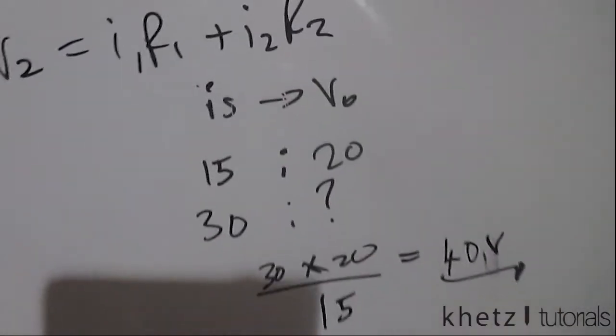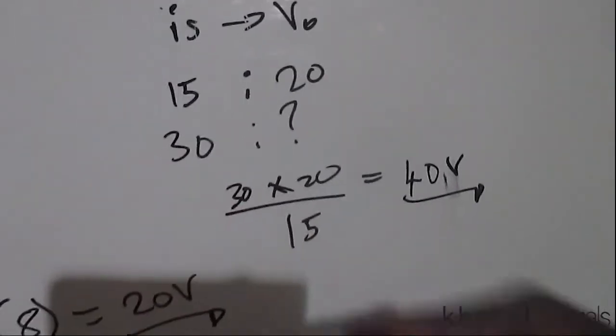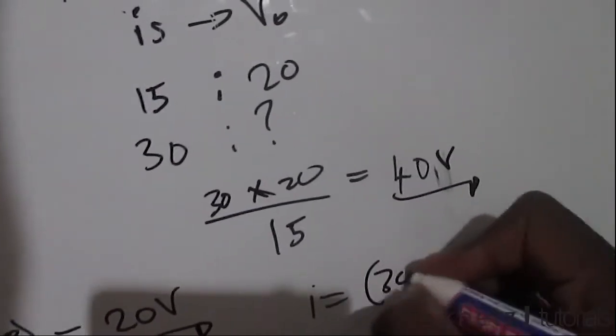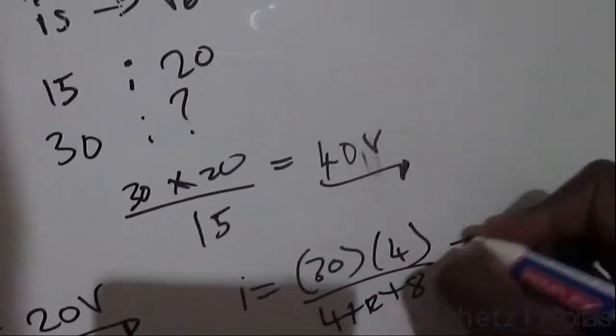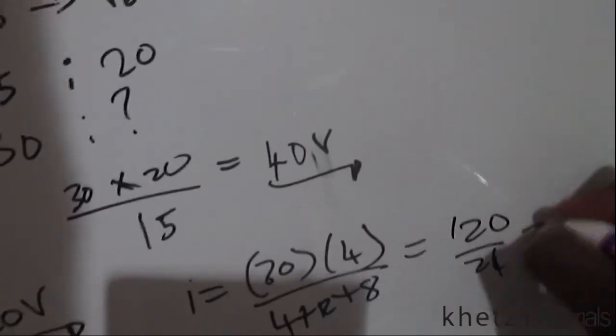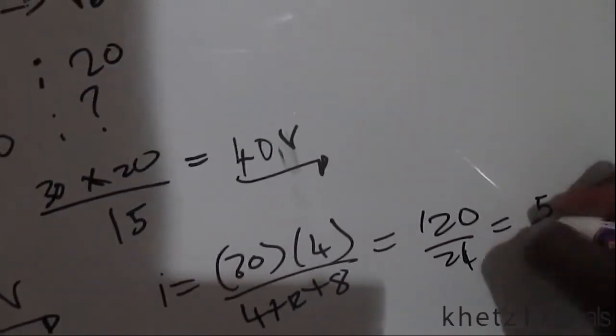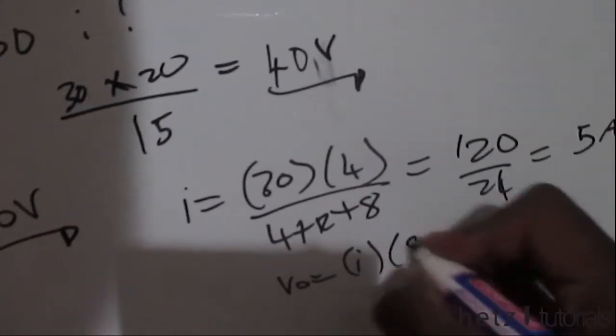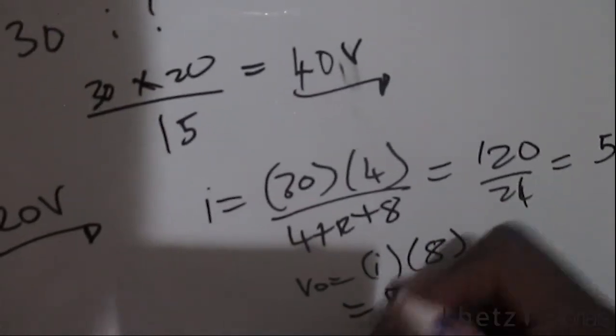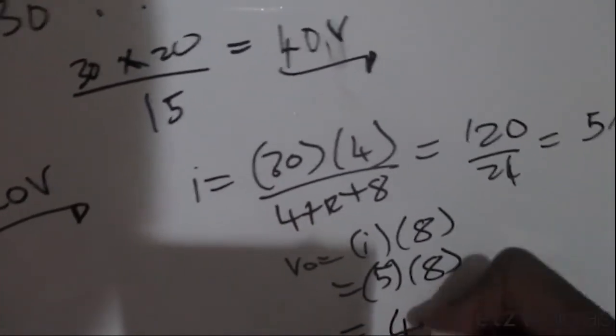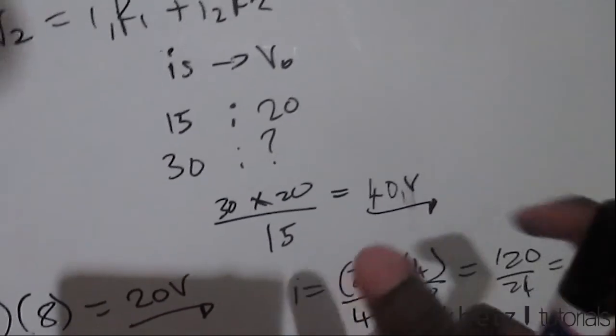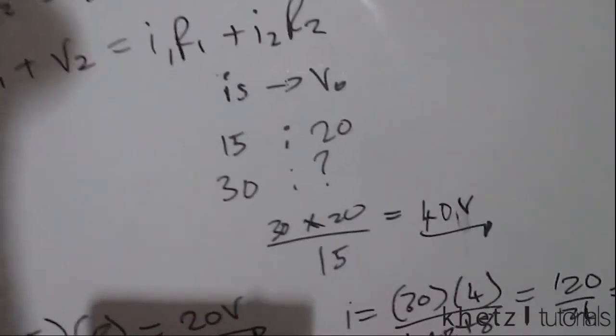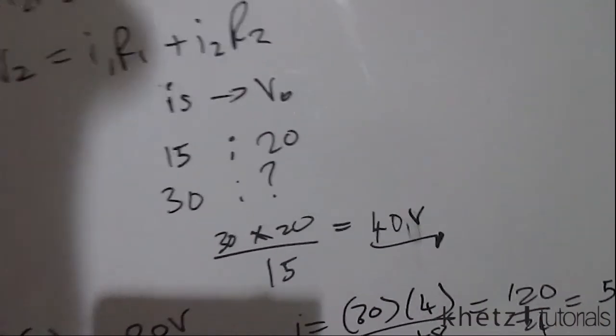So just to confirm that this is the same as when you do current division, you'd say I equals, in this case we have 30 multiplied by 4, and then divided by 4 plus 12 plus 8, which is 120 divided by 24, which equals 5 amperes. And VO equals I multiplied by 8, which equals 5 multiplied by 8, which equals 40 volts. It is the same thing, but the linearity property actually shortened our working to just do proportions and find the value. And that is how you solve this problem.